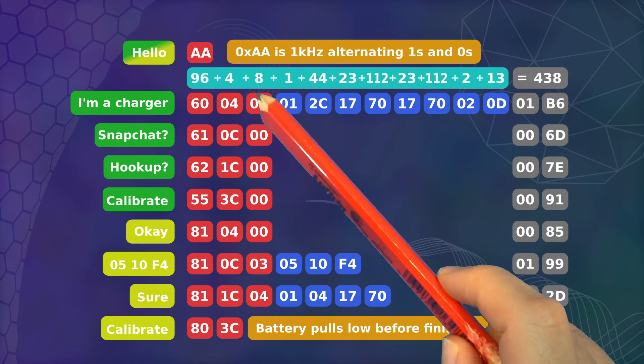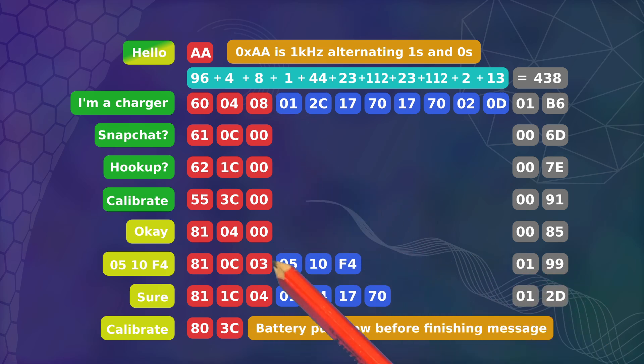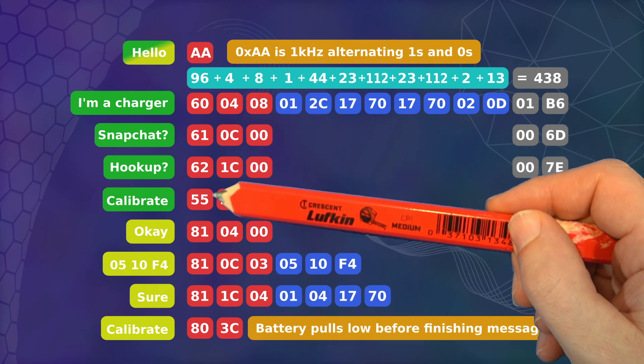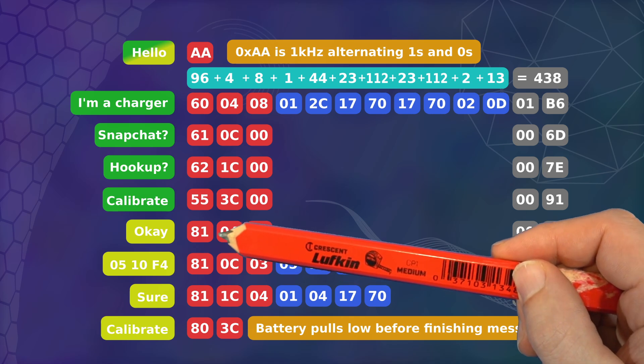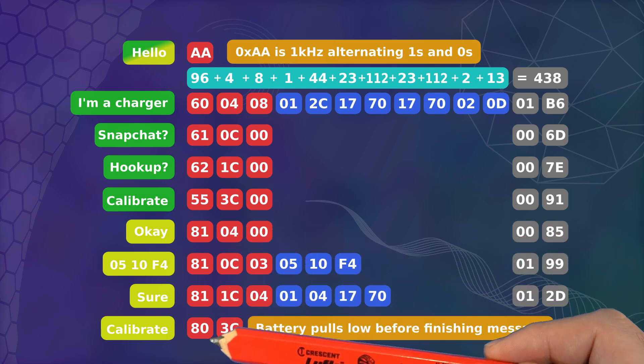The third byte of the header is easy, as it's the number of bytes in the payload. The first byte from the charger is unique to each message. The battery's replies always start with 81, except for the interrupt where it is 80.